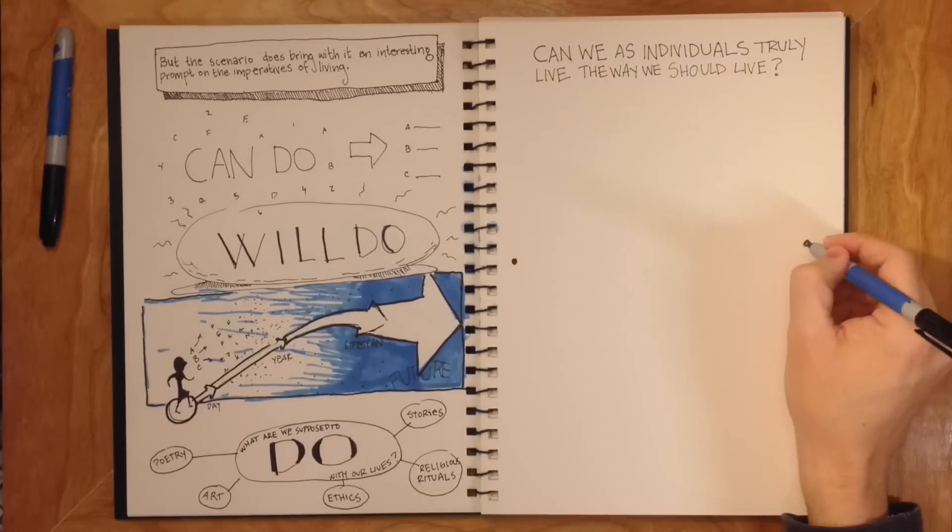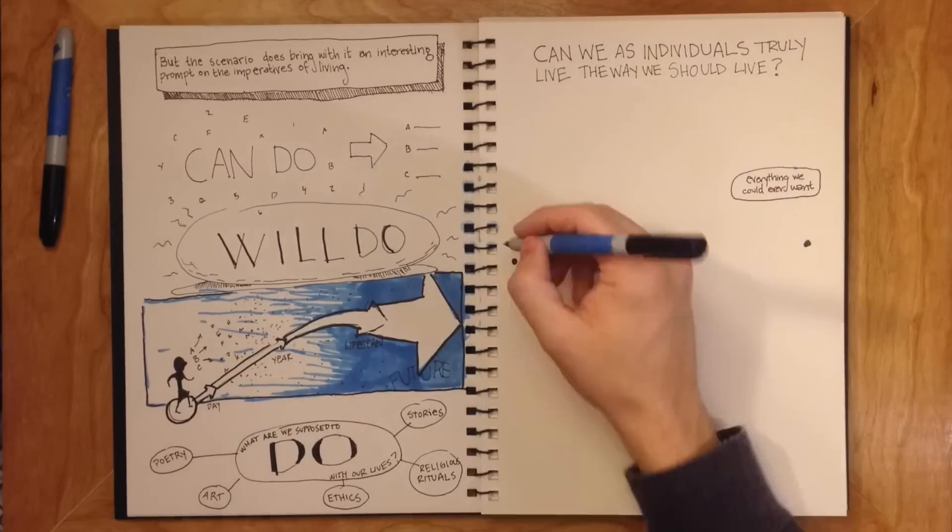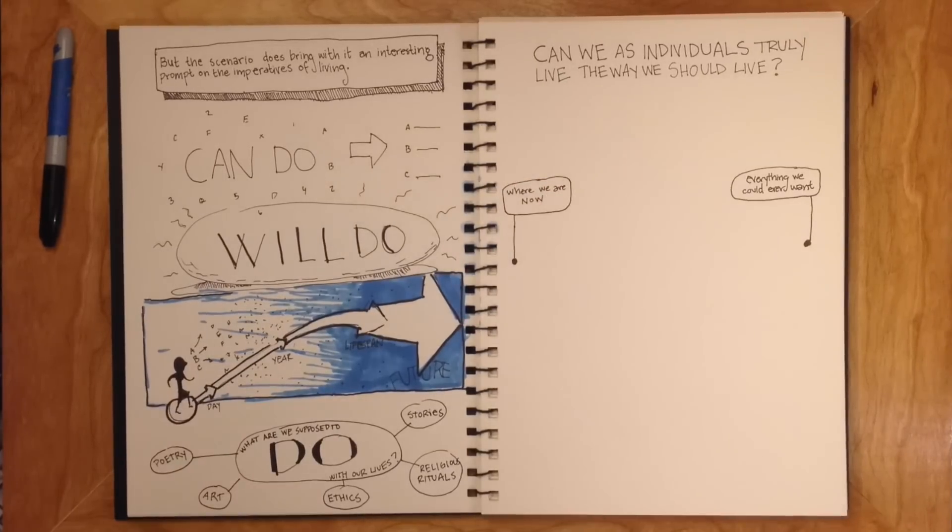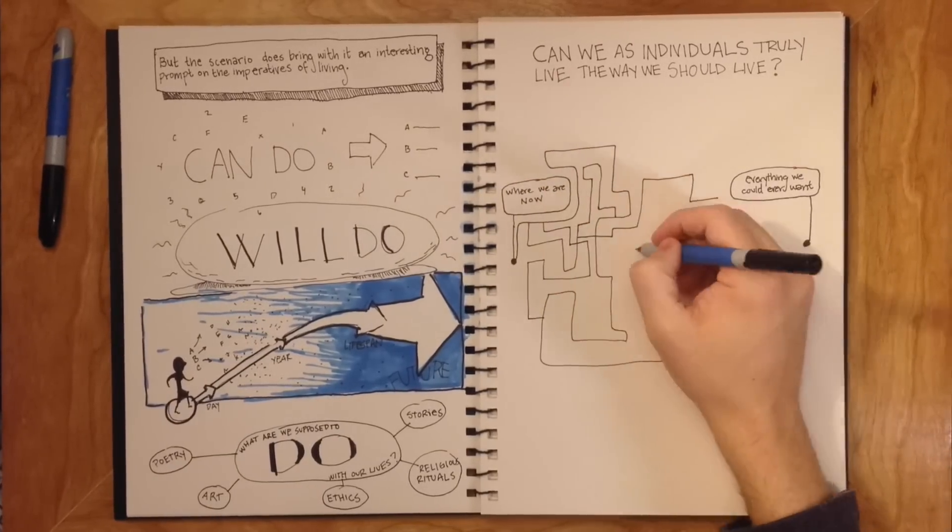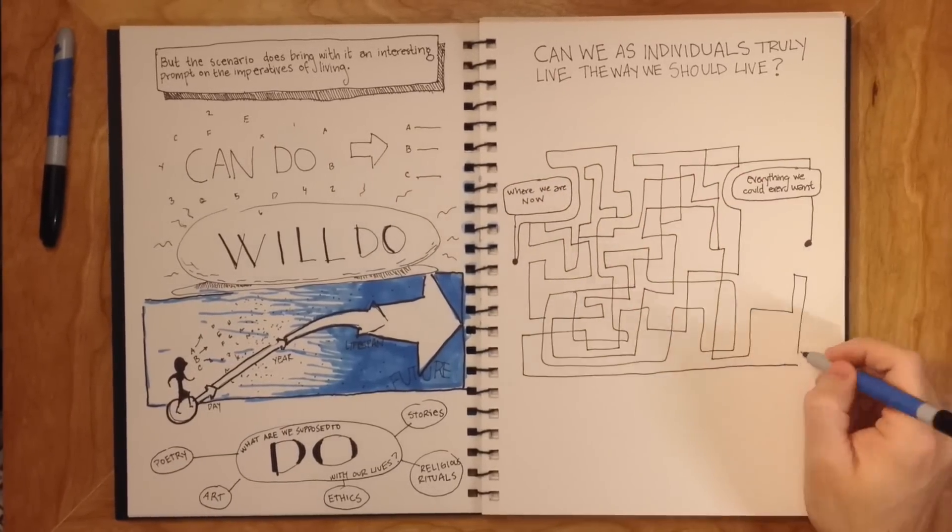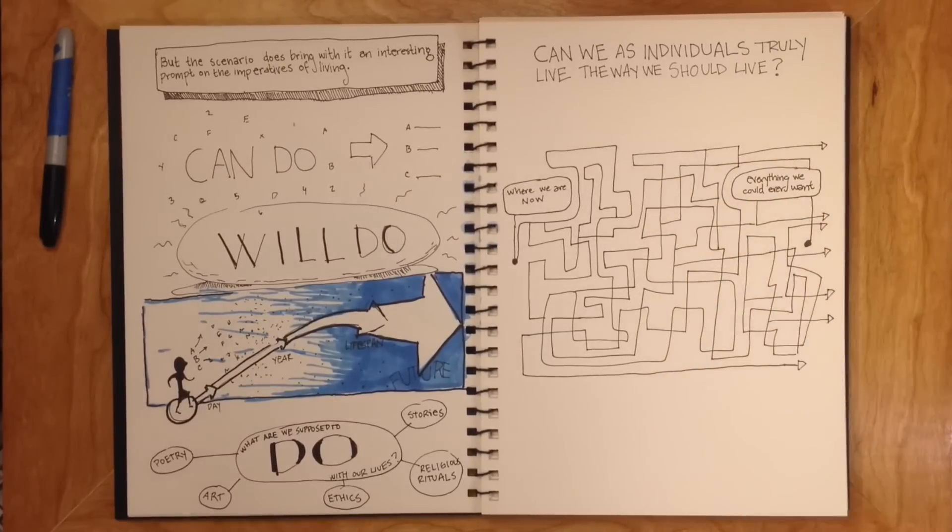If we draw a map where on one end is everything we could ever want out of our short lives and on the other end is where we are now, the circumstances that surround us economically, geographically, romantically, socially.